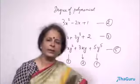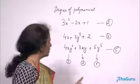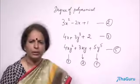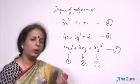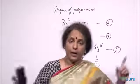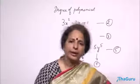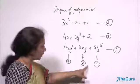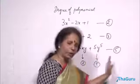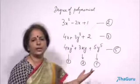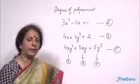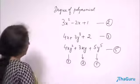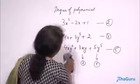This is how we decide the degree of various polynomials. It can have one variable, two variables, or as many variables as possible. We look at each and every term, add all the powers to get the degree of that particular term, then see which is the highest. Whichever is the highest, that is the degree of the entire polynomial. So degree is determined by adding the powers.